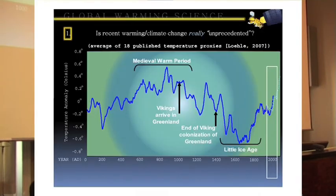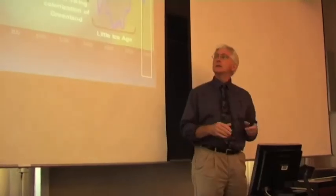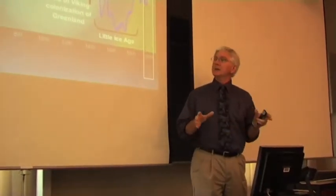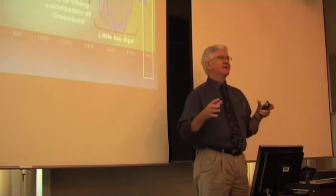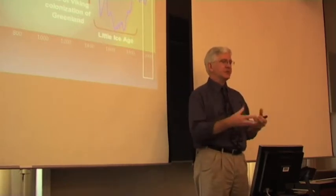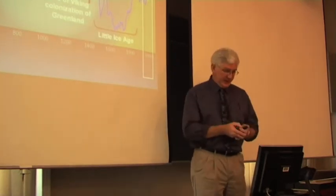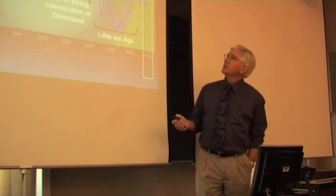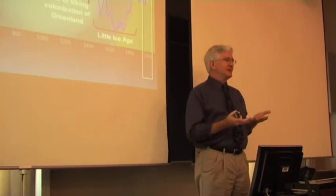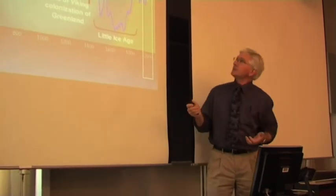This is a reconstruction of the last 2,000 years of temperatures published by Craig Lowley in 2007. All he did was to take 18 previously published temperature proxies and just average them all together, just sum them up. And this is a plot of the results. What it shows is that it does not seem like there is any average climate. The climate is always warming or cooling.